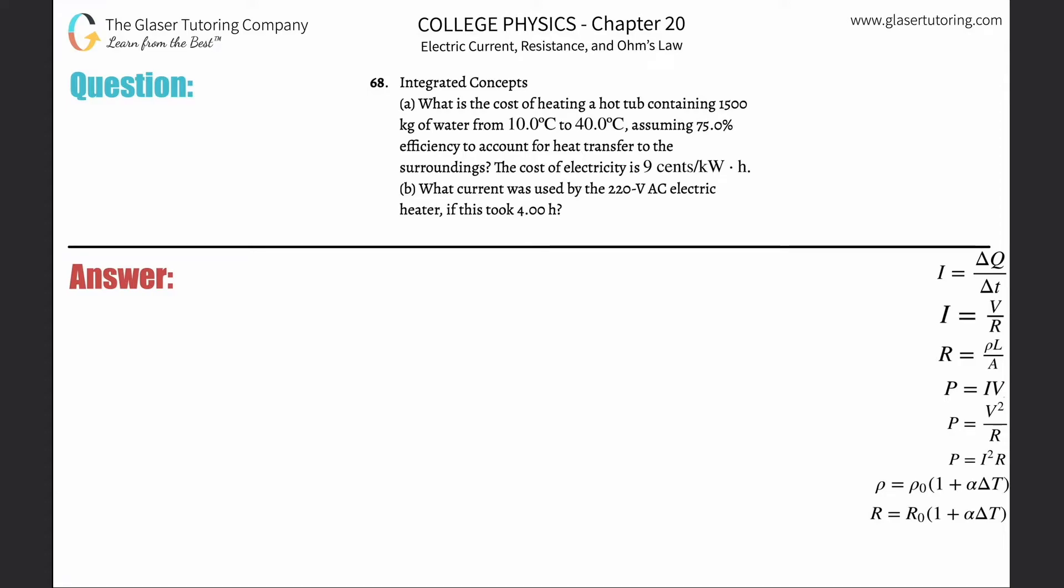Number 68, integrated concepts, letter A. What is the cost of heating a hot tub containing 1,500 kilograms of water from 10 to 40, assuming 75% efficiency and the cost of electricity of 9 cents per kilowatt hour?